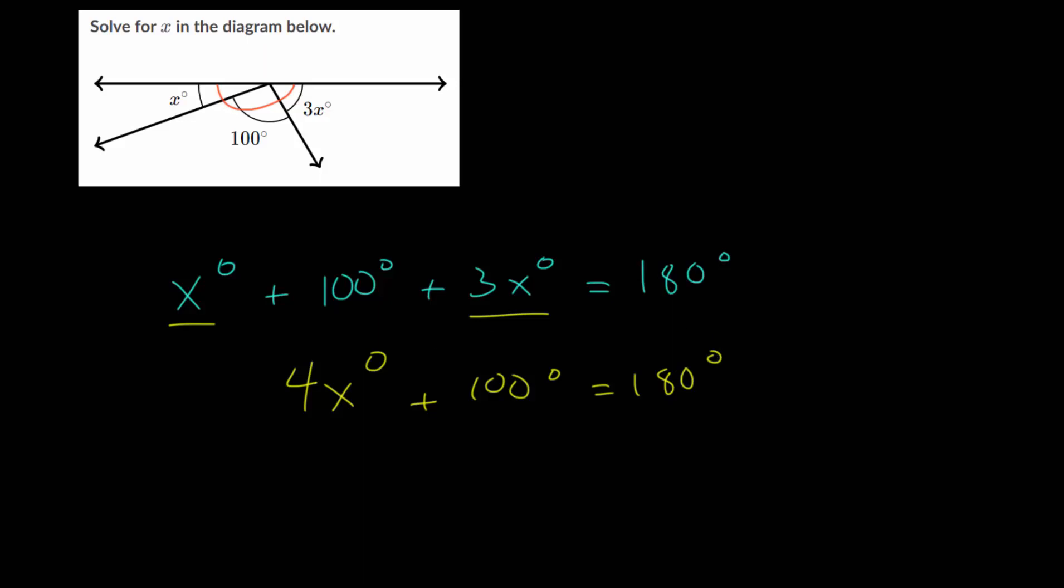And with this two step equation, we want to cancel out addition and subtraction first. So let's cancel out the plus 100 by doing the opposite. We will subtract 100 on each side, so that we get four x degrees equals 80 degrees. And lastly, we want to cancel out this multiplication by four, we will divide each side by four. And four divided by four, that's just one. So x degrees is 80 degrees divided by four, which is 20.